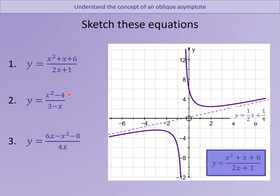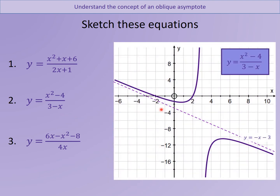Next: x squared minus 4 all over 3 minus x. We notice the numerator is an x squared whereas the denominator is just an x, so it definitely has an oblique asymptote. The top is going to have roots at 2 and minus 2, so it's crossing at 2 and minus 2. And it's going to have an asymptote at 3. I found the oblique asymptote by multiplying through by (3 minus x) giving an Ax plus B form, and worked out the A and B values — getting minus x minus 3. And I got that sort of graph.